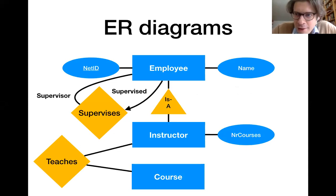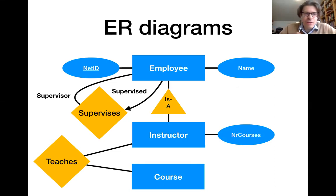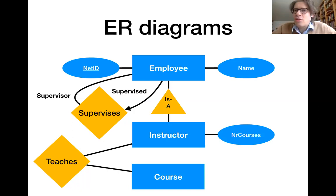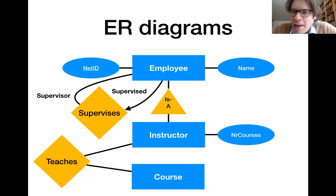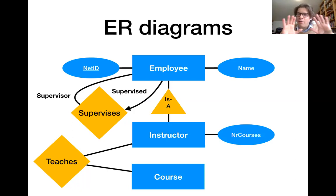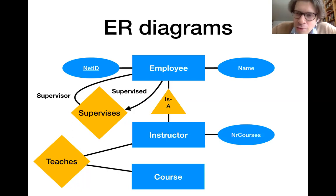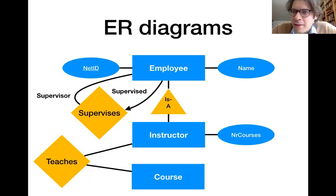One tool that people typically use in order to design a database are entity relationship diagrams, such as the one that you see here, where we represent the entities that should be stored in the database together with their properties and the relationships and subclassing relationships between those different entities. And then we can take one of those entity relationship diagrams and translate them into SQL. I also pointed out a couple of tools which at least partially automate that step.